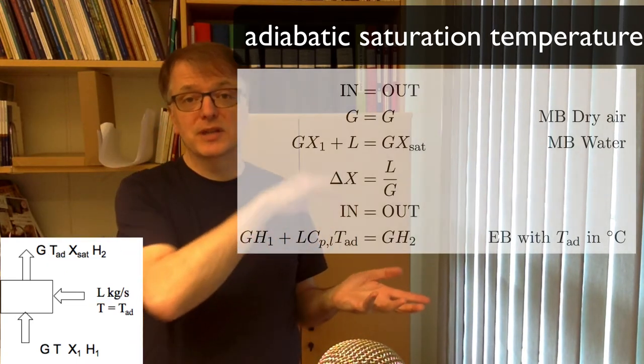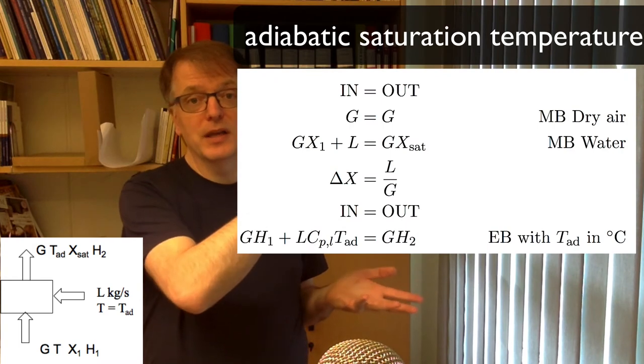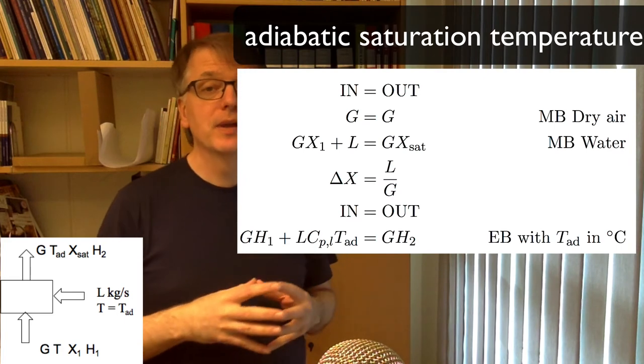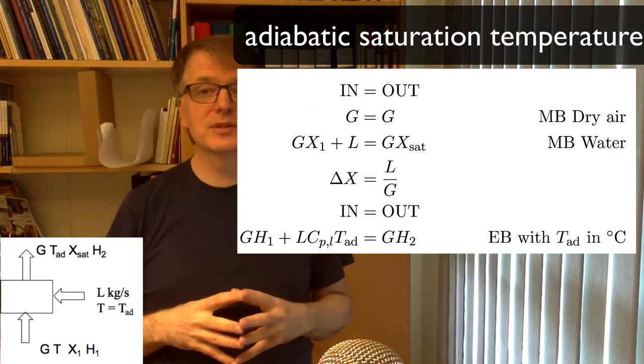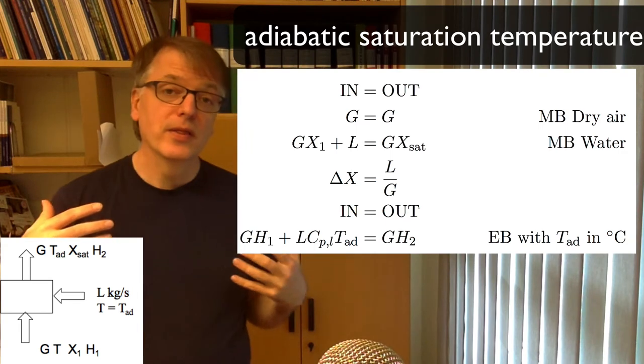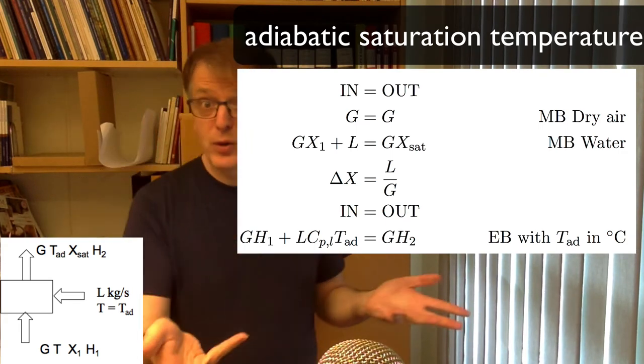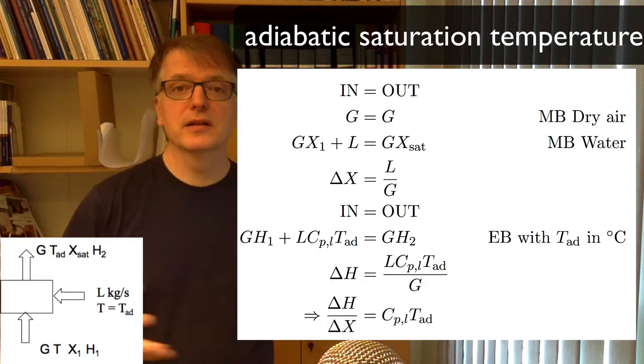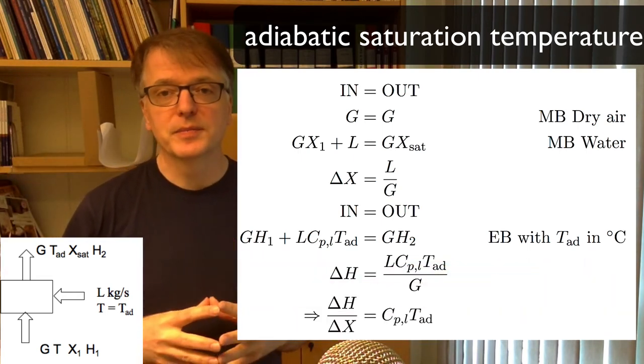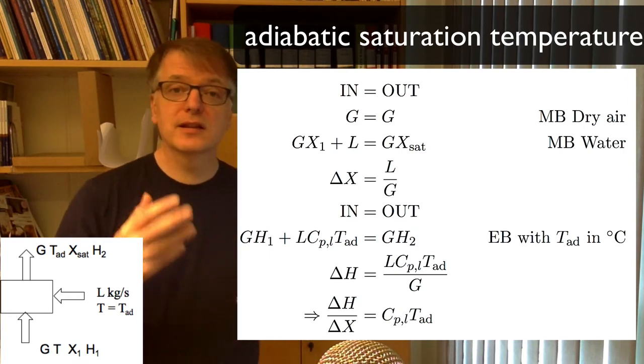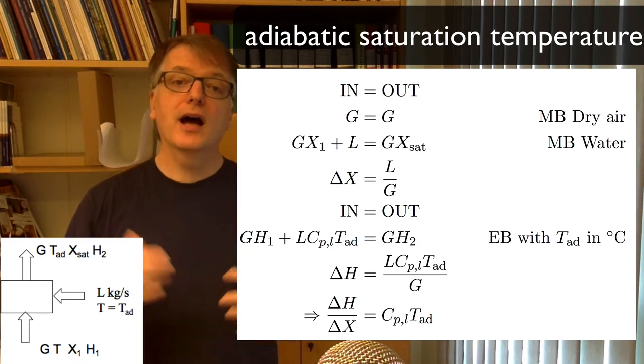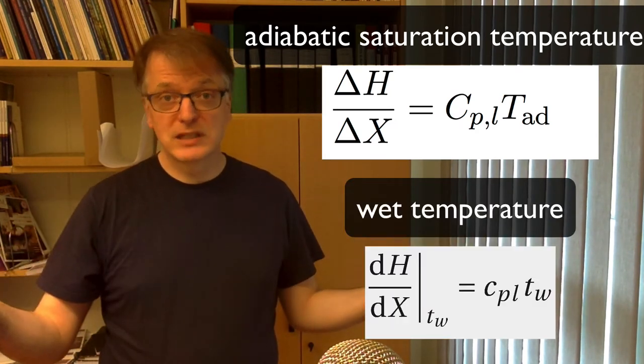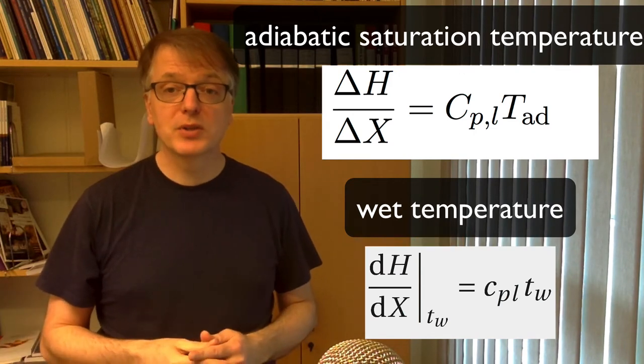Okay, so the energy balance is G times H of the air coming in plus Lcp times the temperature T adiabatic, and then what comes out is G times the enthalpy at the saturation. And then you can express a difference in enthalpy that has to do with the liquid and Cp and so on. And then you divide the two equations to get delta H divided by delta X and it happens to be Cp times the T adiabatic. So the same kind of slope as you had for the wet temperature lines.